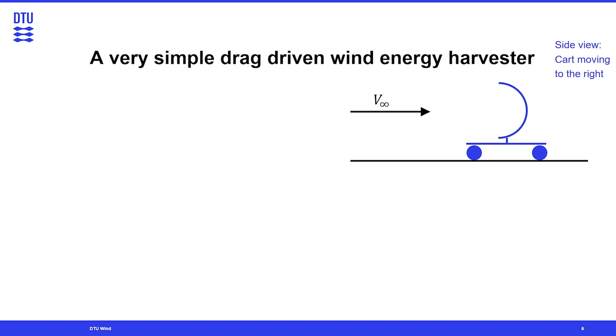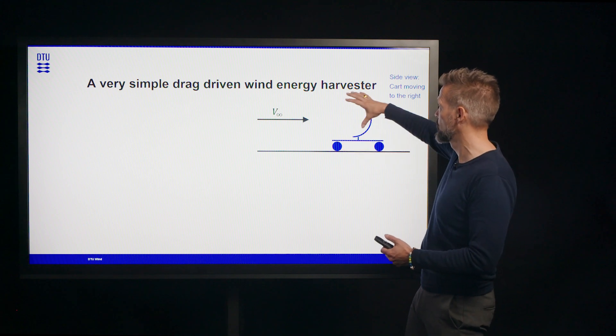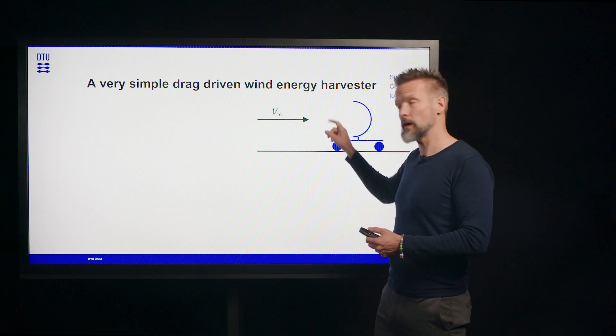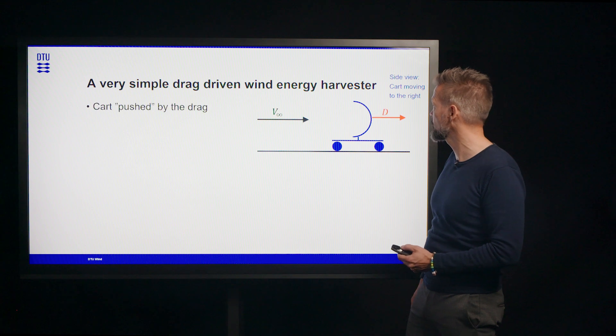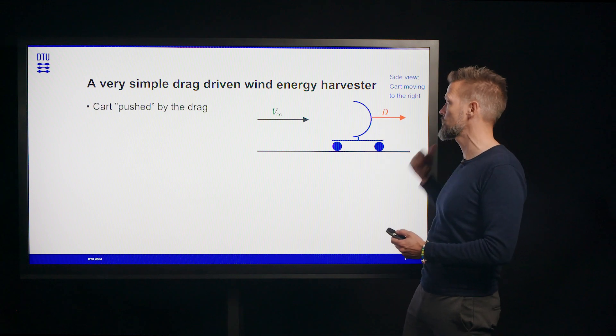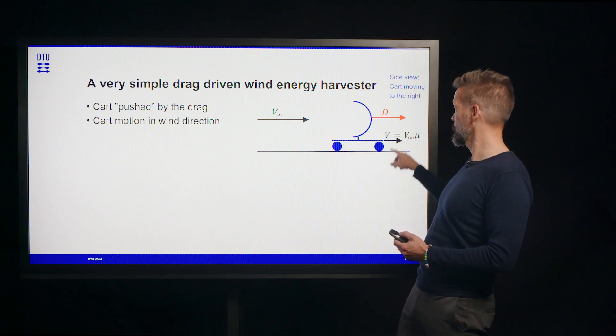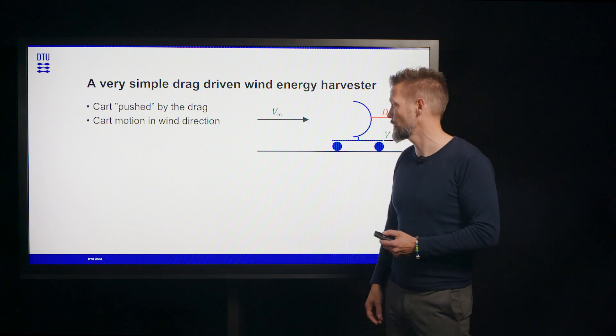So what I'd like to do now is to try and lay out the theory for how you can determine how much power we could get out of the simplest possible drag-driven device. So we have here a cart with this object on with a large drag. We have wind from left to right and this is the ground. And when the wind blows on it, there will be a drag on it. The cart will be pushed by the drag. The cart speed is V and it's expressed as a constant times wind speed. That would be convenient for later on.